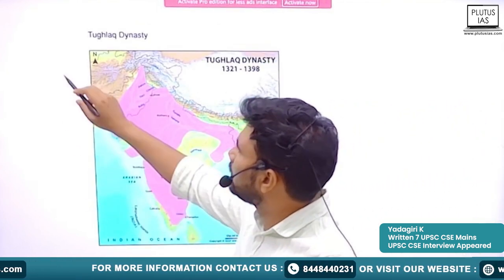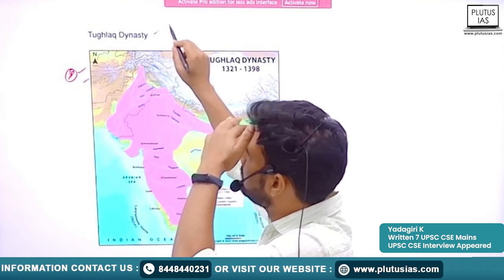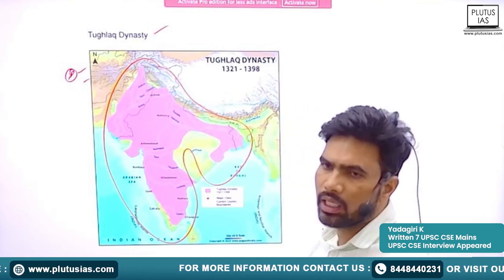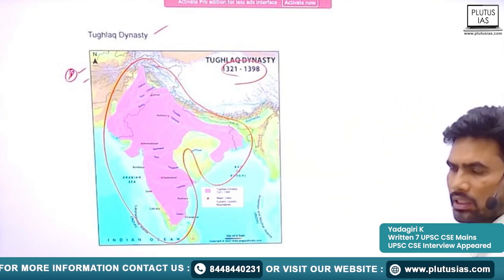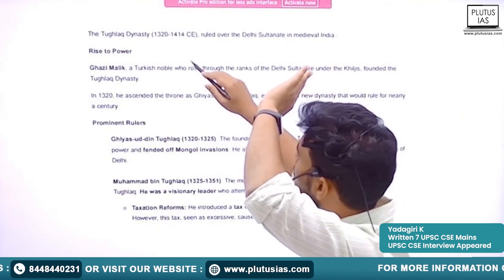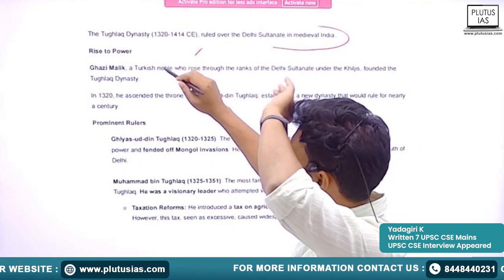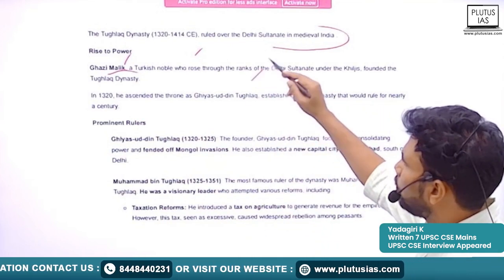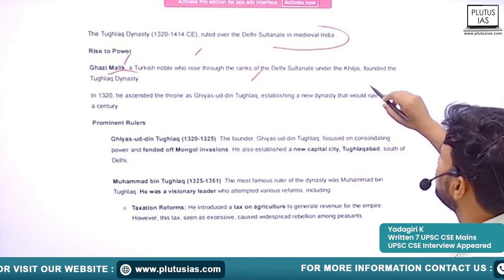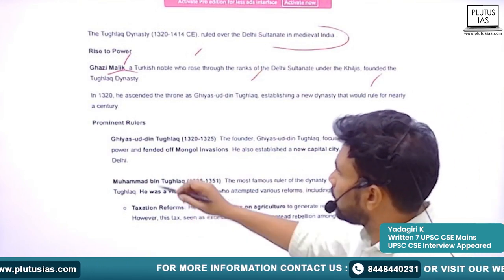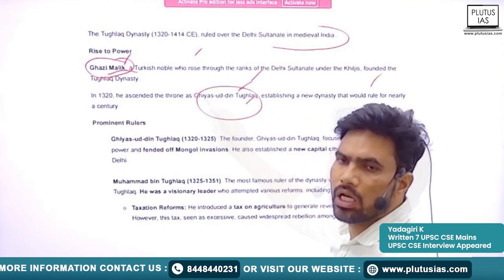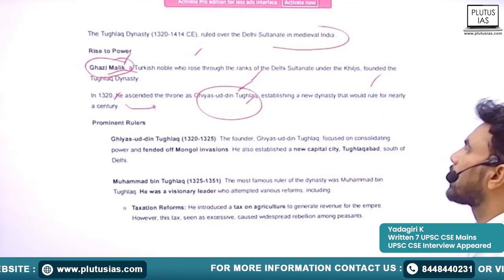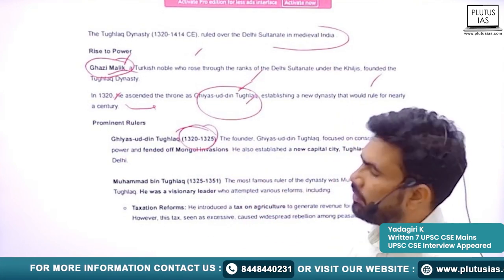The next important dynasty — in the entire Delhi Sultanate period this dynasty is very important — is the Tughlaq Dynasty. The period is between 1321 to 1390. The rise of the Tughlaqs into power: Ghazi Malik was a Turkish noble who rose through the ranks of the Delhi Sultanate under Khalji. He founded the Tughlaq Dynasty. When he assumed the throne, he took the title of Giyazuddin Tughlaq in 1320. Ghazi Malik ruled between 1320 and 1325, for a period of five years.